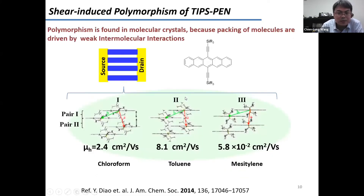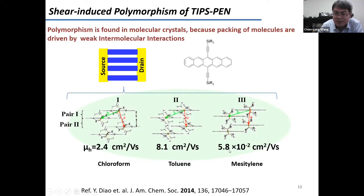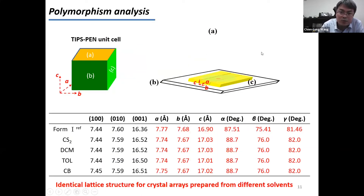Looking into the literature, one possibility that could decrease mobility is the polymorphic behavior of TIPS-pentacene. Professor Dell reported that TIPS-pentacene can form certain packing arrangements that give very high mobility, and others where mobility is very low. If these two kinds of packing coexist along the charge transport channel, the low-mobility packing will decrease device performance. We needed to determine whether this polymorphism existed in our crystal arrays.